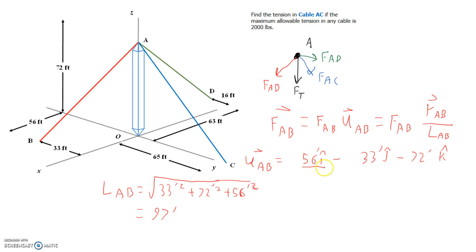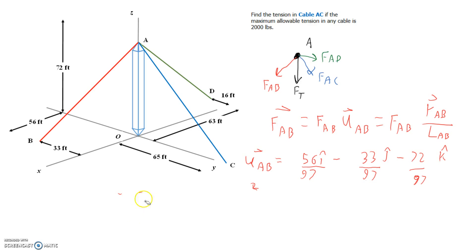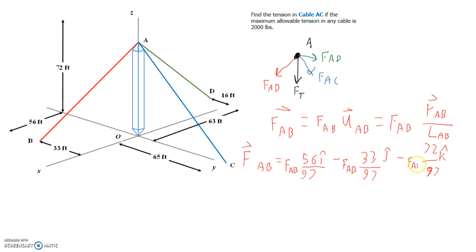So I'll divide everything by 97 feet to get the unit vector. Dividing each term by 97 feet, the units cancel out and we're left with a unitless unit vector pointing in the direction we want. The last step is to multiply by the magnitude of the force FAB, giving us the complete force vector for AB.